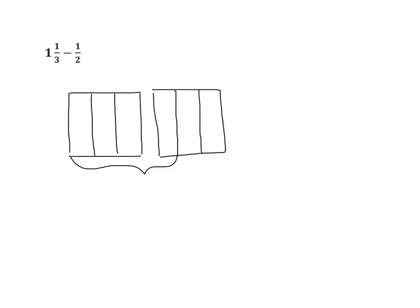Next, we're going to partition it going horizontally so that we find our halves. We can see that now we have a common denominator of 6. So we're going to take our 1 and 1 third and decompose it into its sixths. The 1 has 6 parts out of 6, so 1 decomposes to 6 sixths. And the 1 third decomposes — the equivalent fraction is 2 sixths.